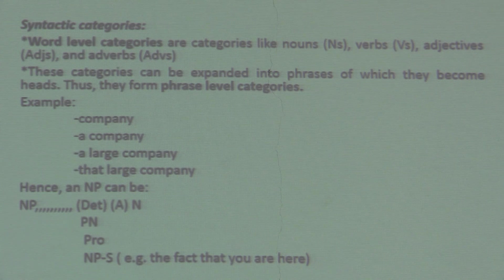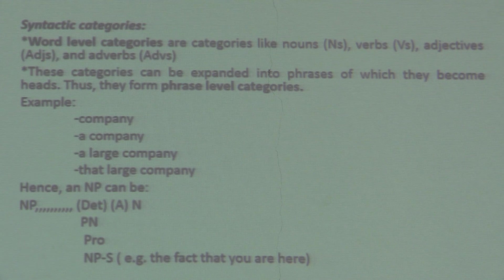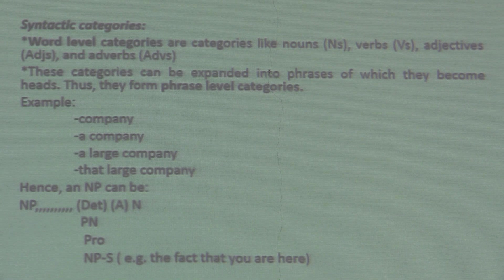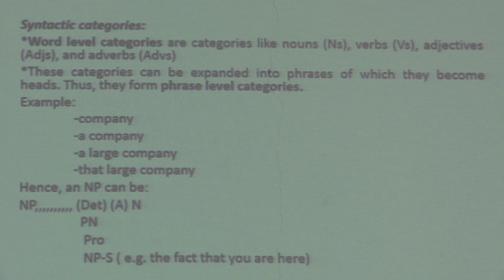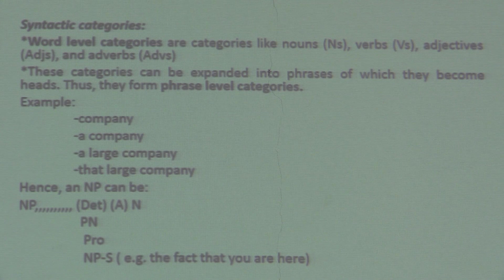How is this represented in syntax? The NP 'company' can be represented as: NP → (Determiner) (Adjective) N. The parentheses indicate optional elements, meaning the NP may consist of just the head N alone — like 'company' by itself. When extended, we add a determiner, adjective, and so on. An NP can also be represented as a proper noun, a pronoun, or an NP followed by a sentence, like 'the fact that you are here.'